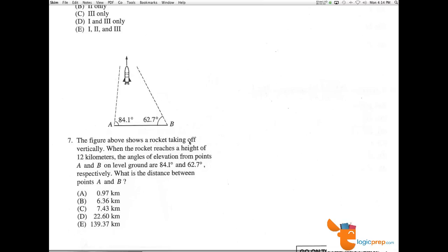Number 7. The figure above shows a rocket taking off vertically. When the rocket reaches a height of 12 kilometers, so our height here where our rocket finally reaches is 12, the angles of elevation from points A and B on level ground are 84.1 and 62.7 degrees respectively. What is the distance from A to B?